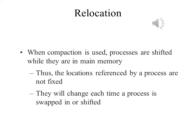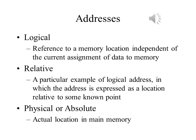They will change each time a process is swapped in or shifted. To solve this problem, a distinction is made among several types of addresses. A logical address is a reference to a memory location independent of the current assignment of data to memory — a translation must be made to a physical address before the memory access can be achieved. A relative address is a particular example of a logical address, in which the address is expressed as a location relative to some known point, usually a value in a processor register.